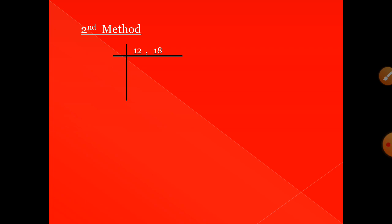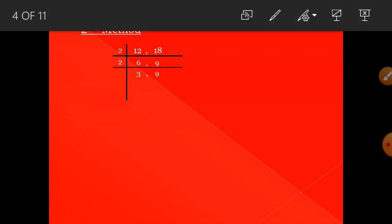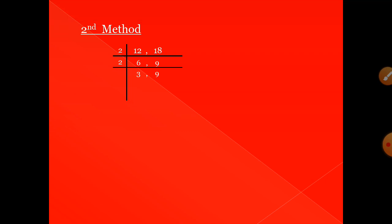In the second method, write 12 and 18 side by side. Find a prime number that divides both numbers. Twelve and eighteen are both divisible by 2 — 2 sixes are 12, 2 nines are 18. Then take 6 and 9. 6 is divisible by 2 — 2 threes are 6. But 9 is not divisible by 2, so write 9 as it is. If a number is not divisible, write it in the same way.